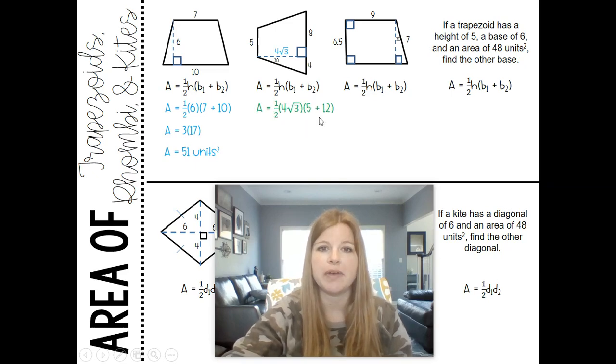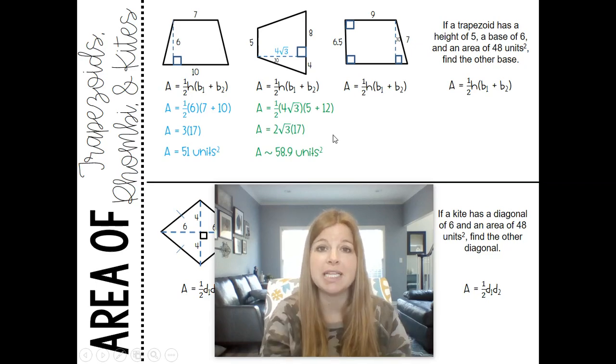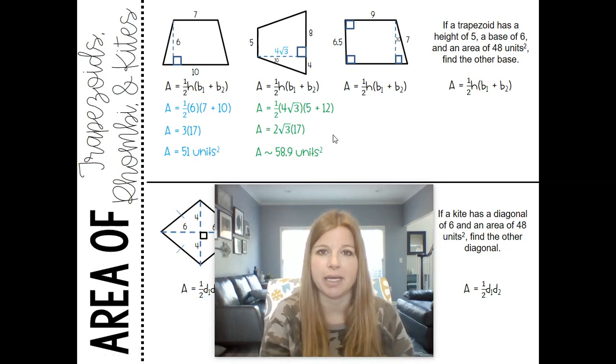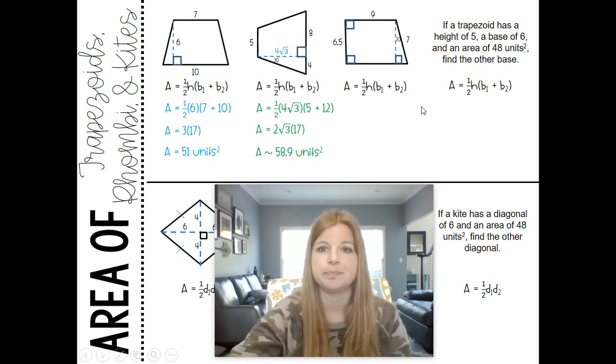So now I can plug my values in. So this is one half, times four radical three, my base of five, my entire base length here of twelve. Half of four radical three is two radical three, five plus twelve is seventeen—it's just a coincidence that it was also seventeen here—and then if I multiply that out and I round to my nearest tenths place, I get 58.9 units squared.